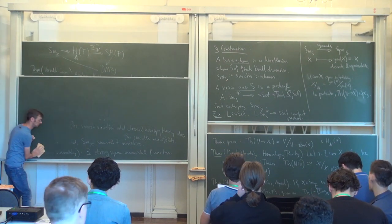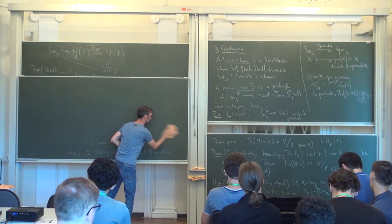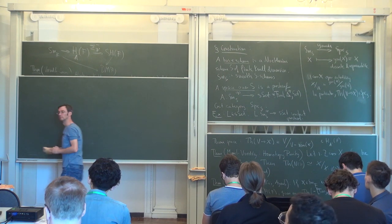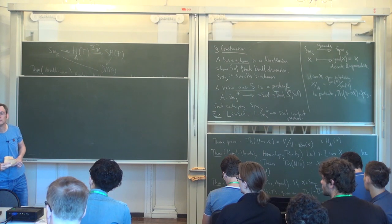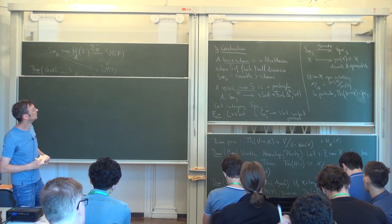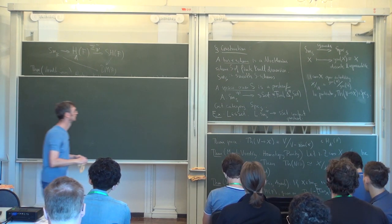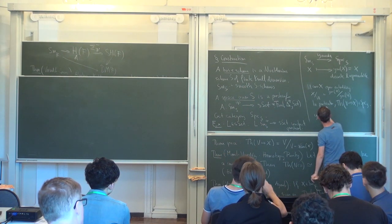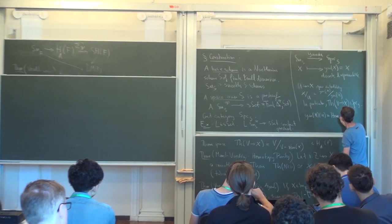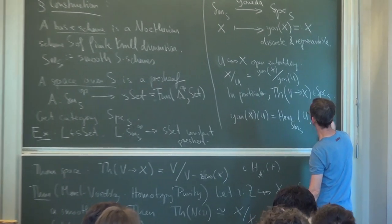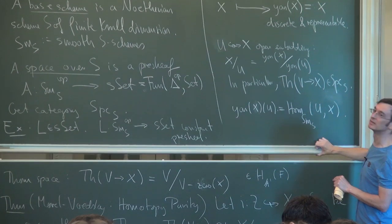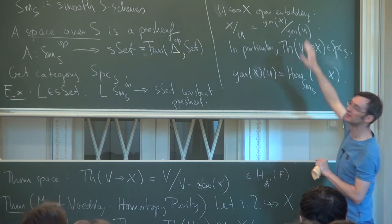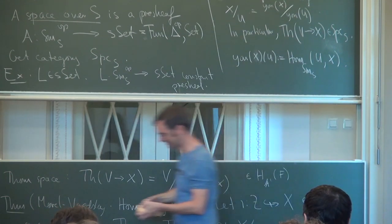Any questions so far? It is the value of your Yoneda of X on some U. Ah, yes, this I did not really define. So this is the set of maps in smooth S-schemes from U to X. Thank you. Oh, it is—it's just a set, so in particular a simplicial set. Yeah, this is what is meant by discrete. Further questions?